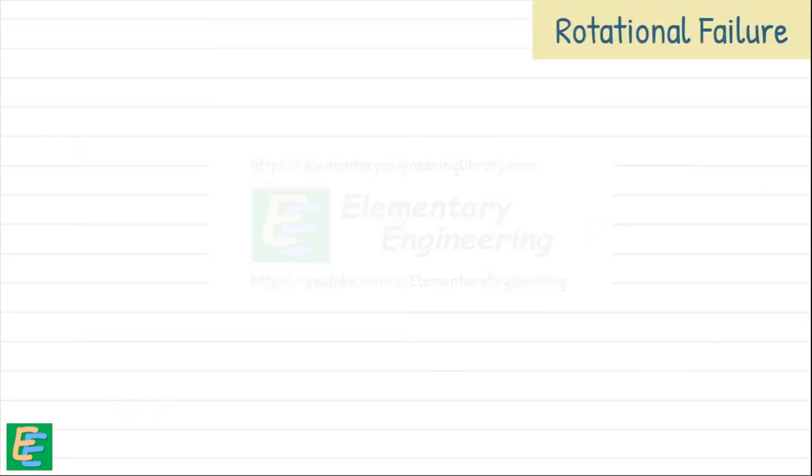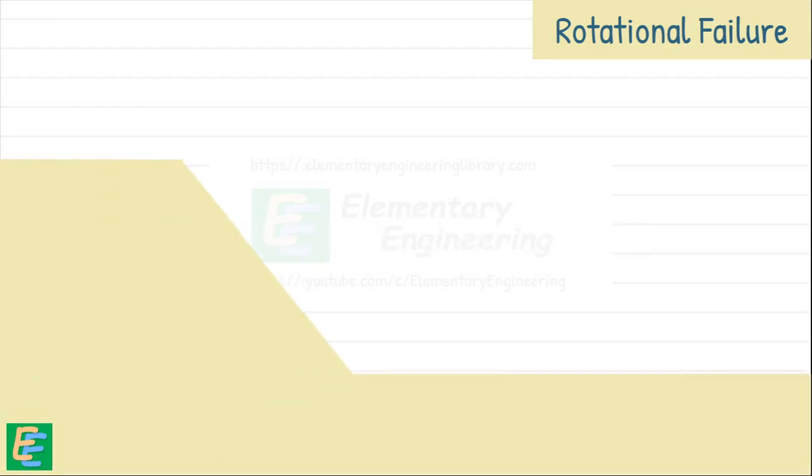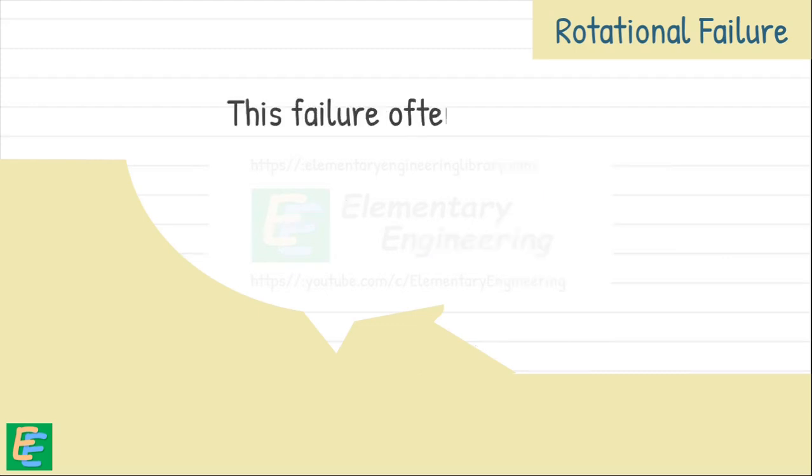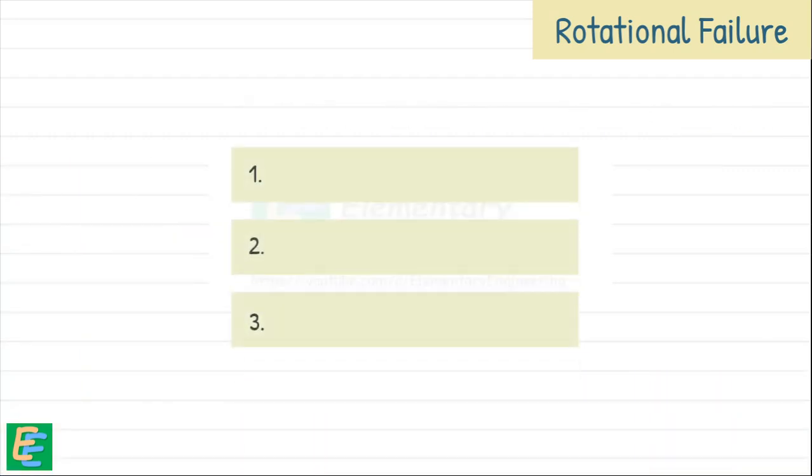First is rotational failure. This type of failure is common in finite slopes. Rotational failure happens when a chunk of soil rotates along a slip surface, moving downward and outward. As the soil slides, it rotates backward, leaving a concave scar at the top and a bulging toe at the bottom. This slip surface is usually circular in homogeneous soil conditions and can be non-circular in non-homogeneous soils. This type of failure often occurs on steep slopes that are oversaturated with water, where excess pore water pressure weakens the soil's shear strength. Engineers frequently analyze these using the method of slices. Rotational failures can be further divided into three categories.